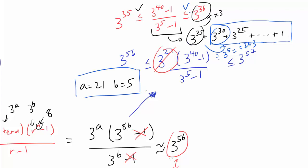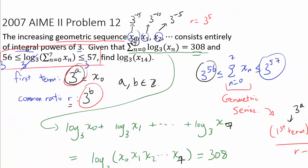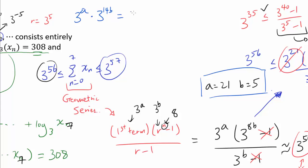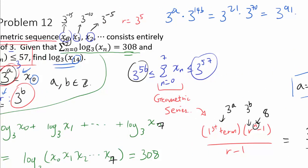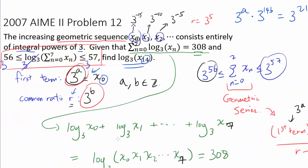So a = 21 and b = 5 is confirmed. We want log base 3 of x₁₄. Starting from x0 = 3^a and multiplying by the common ratio 14 times, x₁₄ = 3^(a + 14b) = 3^(21 + 14×5) = 3^(21 + 70) = 3^91. Taking log base 3, our final answer is 91.